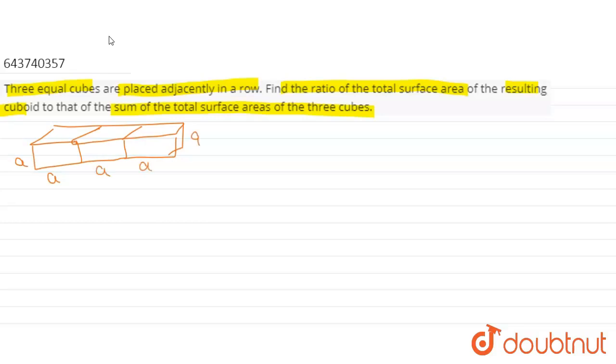So the resulting cuboid will have its length as A, breadth as A and height as 3A. So the total surface area will be 2 times of A square plus A square plus 3A square.